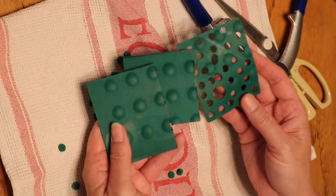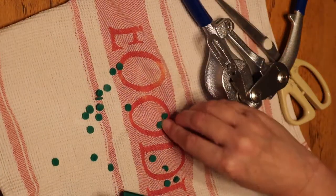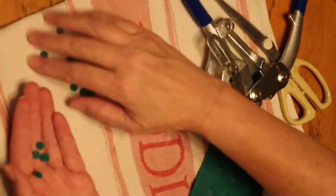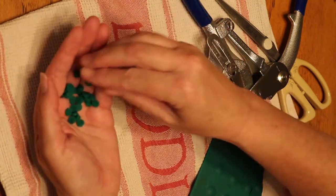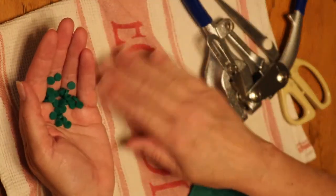Leftover silicone circles could be used for other projects such as making bead spacers for jewelry making. However, they probably wouldn't be good for projects that involve gluing since they have a non-stick surface.